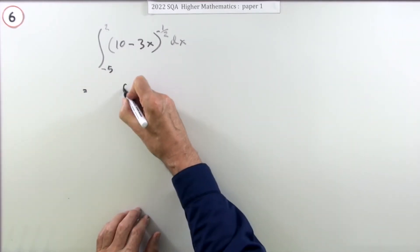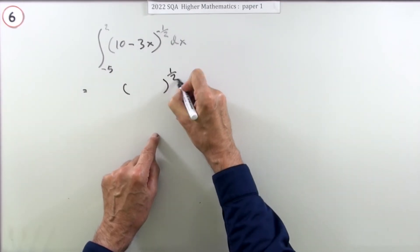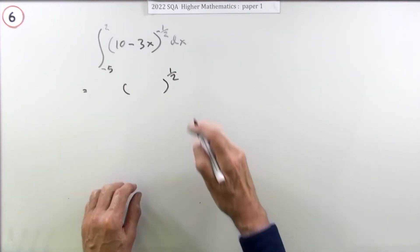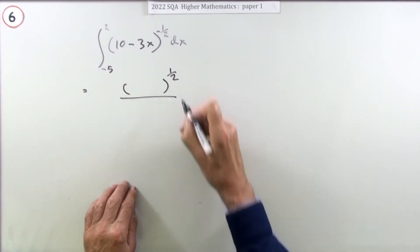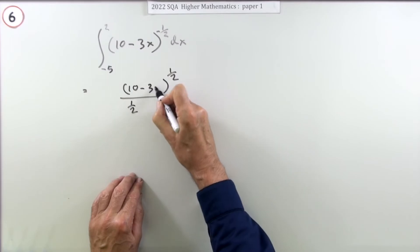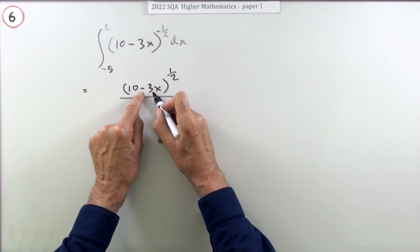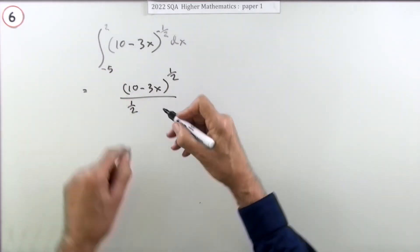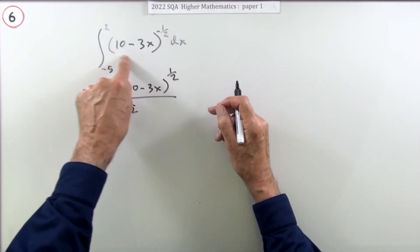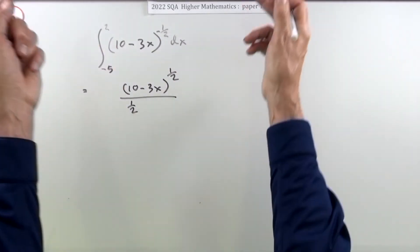If it was just x, the next line would add one to the power and divide by the new power. I'd prefer to multiply by the reciprocal, but dividing by the new power gives times a half. Now consider the inside: it was 10 minus 3x, the derivative of that is negative 3. So divide by that negative 3, because that's the opposite of what you'd do when differentiating — since you're integrating, you divide by the inner derivative.